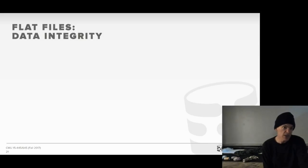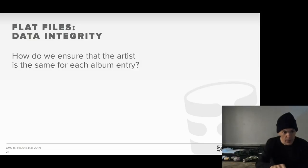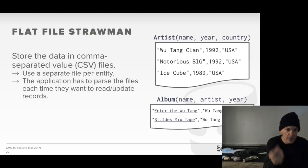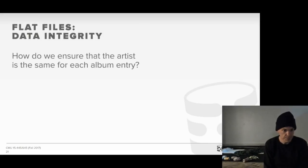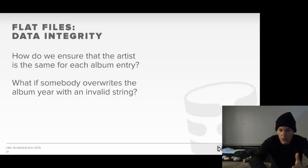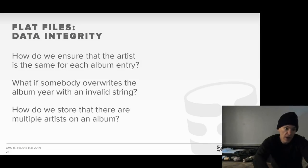What are the problems with this? First, how do we ensure integrity of the data? If Wu-Tang Clan has multiple albums and we update one record but not another, how do we make sure the string is always the same? What if someone writes bad code that overwrites the album year with an invalid string — the year has to be a number, but what if someone stores 'XYZ'? What do we do when we encounter that? And if an album has multiple artists, do we have multiple lines per entry, or do we store an array? But then how do we keep that comma-separated? It becomes problematic.